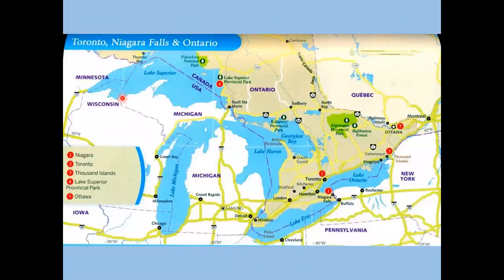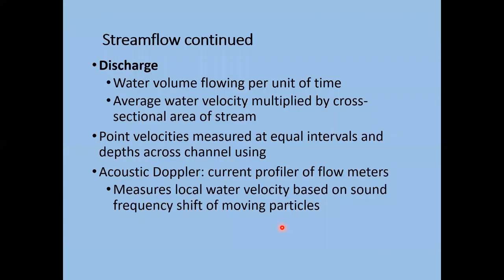At the rate Niagara Falls is eroding, it's thought that in about 50,000 years it will have eroded the rock all the way back to the point of origin of the river — Lake Erie, one of the Great Lakes. Here's a map showing how far Niagara Falls has to go before it reaches Lake Erie.